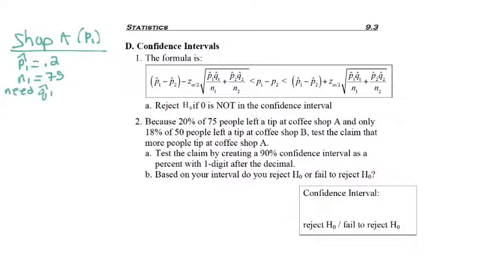And we do need q-hat 1 for these problems. For the hypothesis test, we did not. So 1 minus p-hat would be 1 minus 0.2, which is 0.8. We don't need x1 in this formula. Now we can find our second population data.